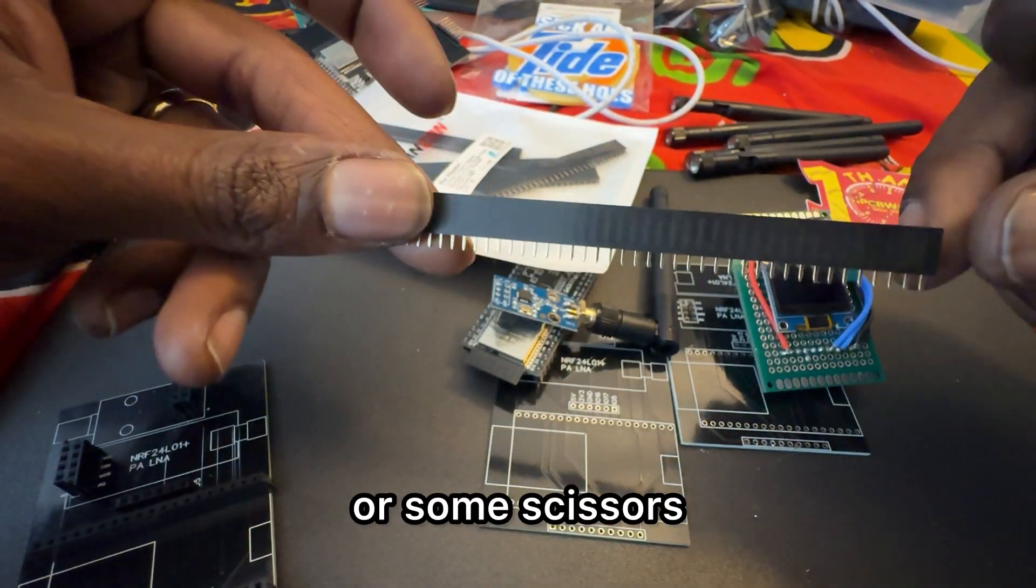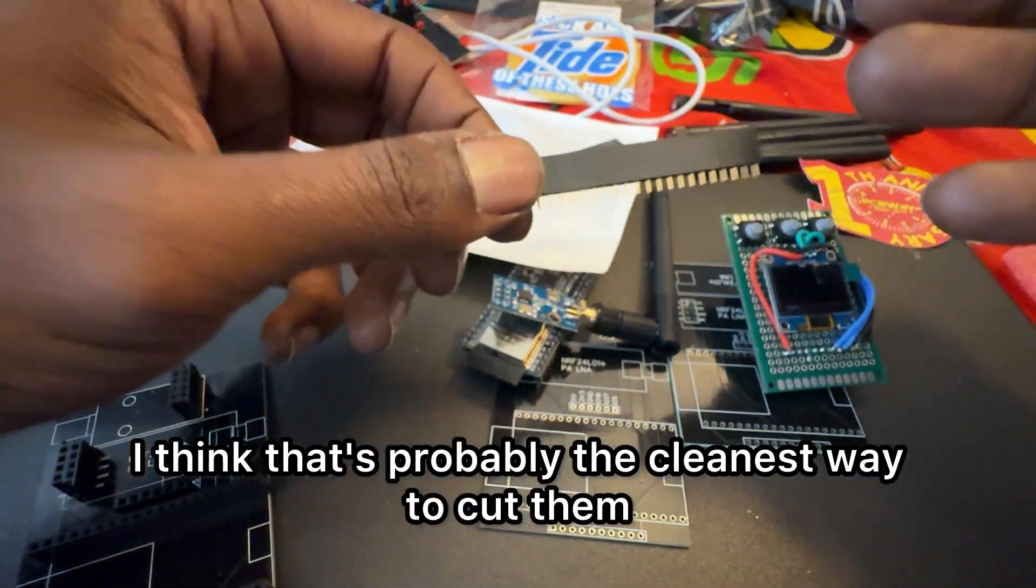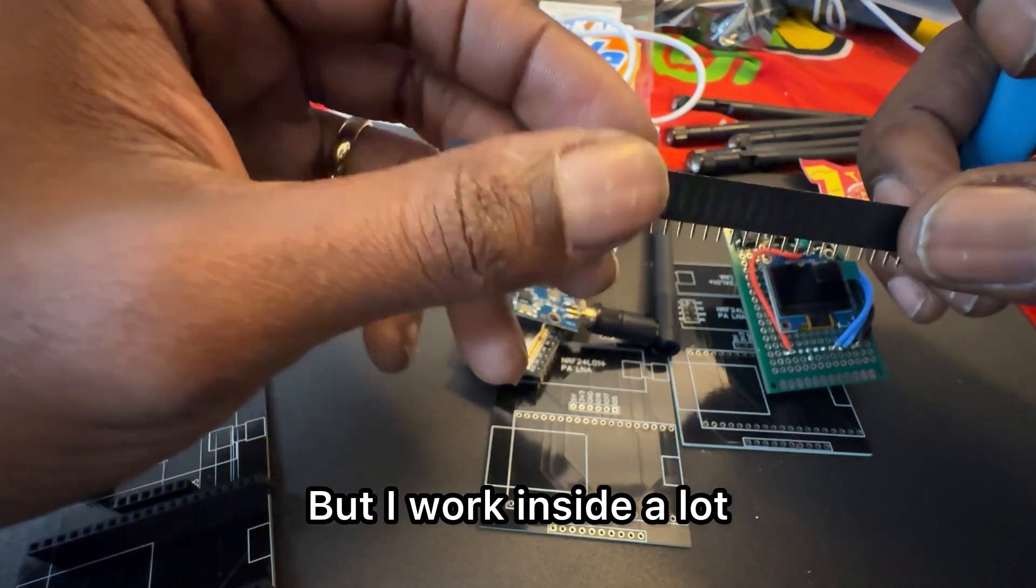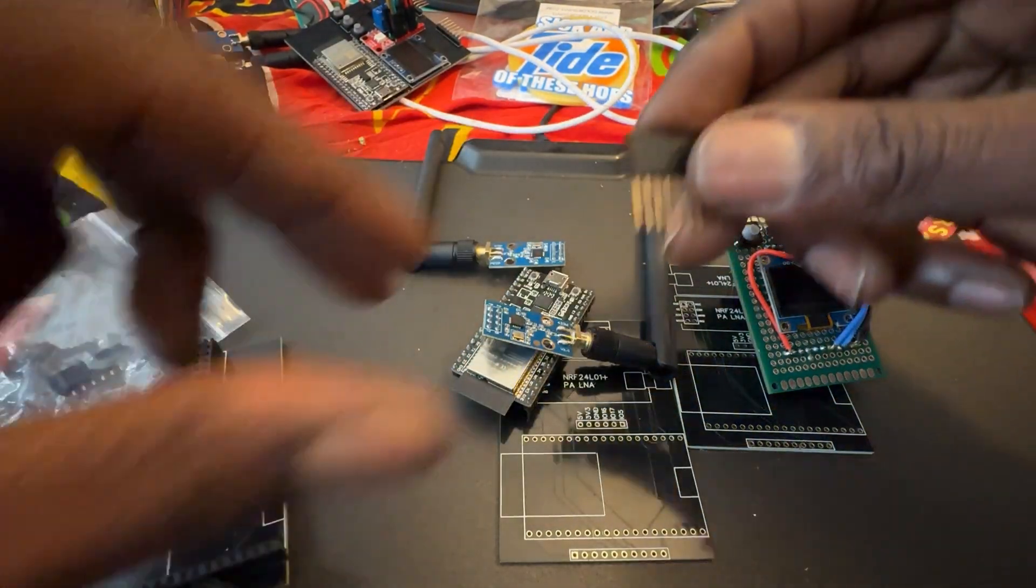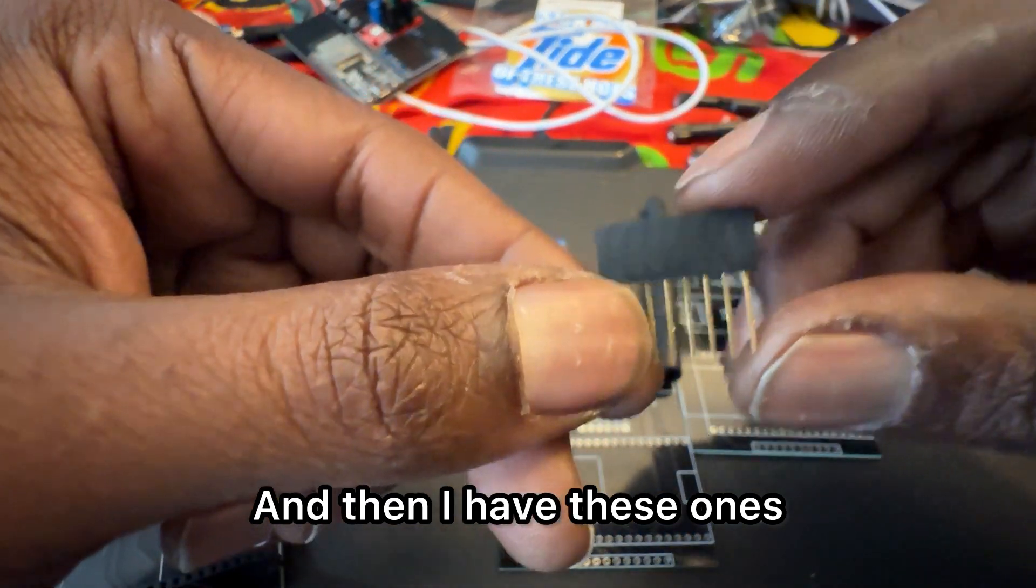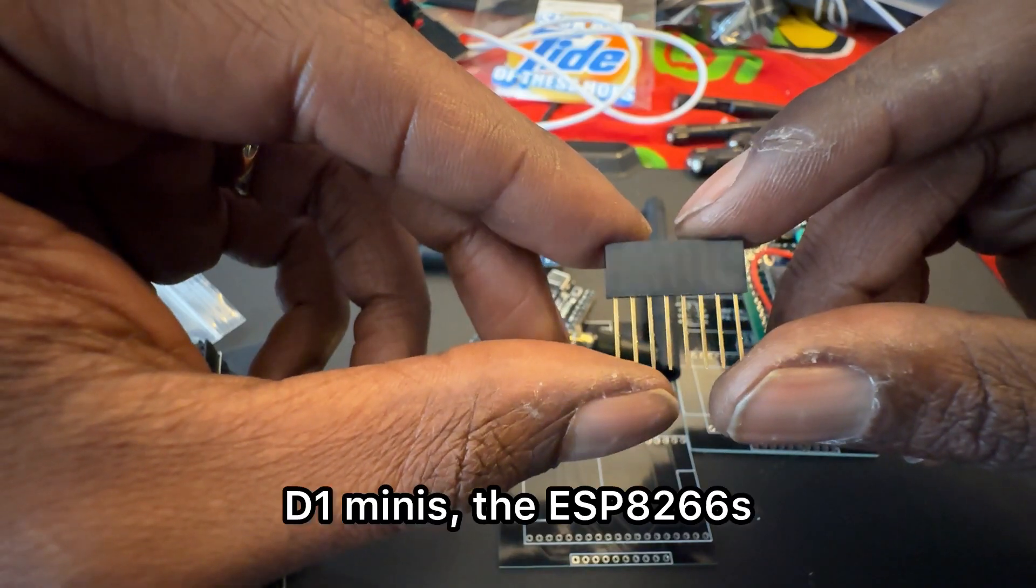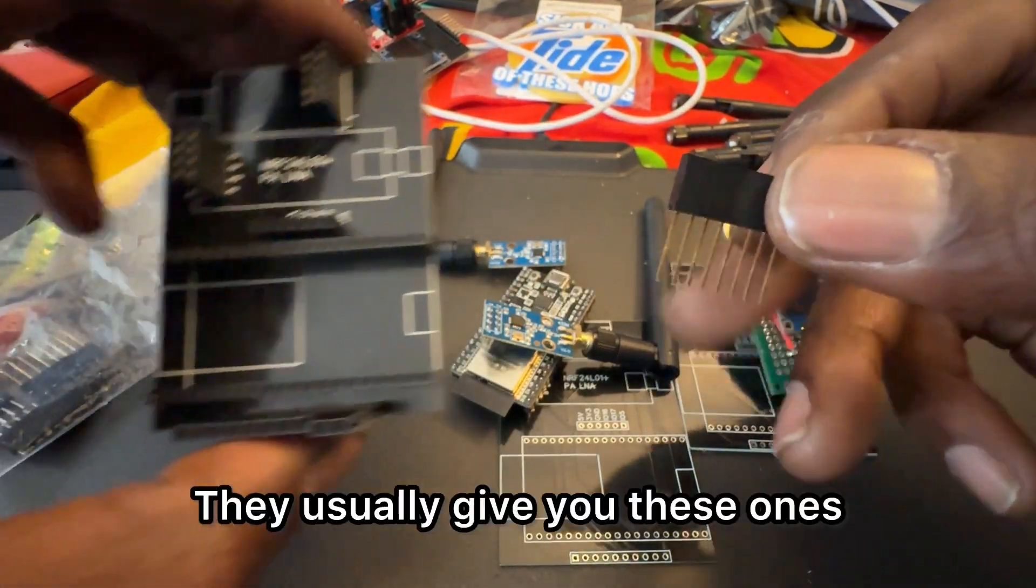If you don't care, you can heat up a knife or some scissors and just melt through it. I think that's probably the cleanest way to cut them, but I work inside a lot so I don't want the smell of burning plastic. Then I have these ones which I got from a lot of D1 minis, the ESP8266s.